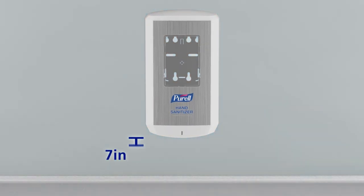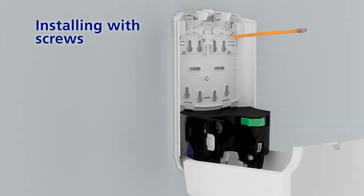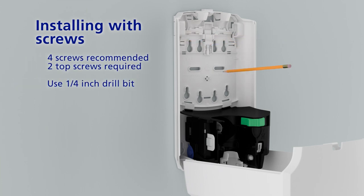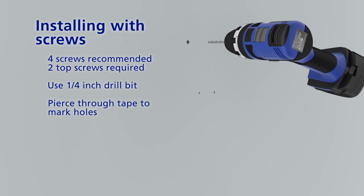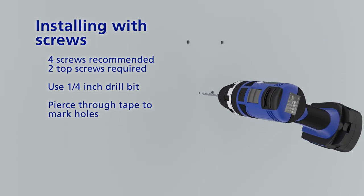Leave a 7-inch clearance below the dispenser for proper servicing. To install with screws, use the dispenser as a template to mark and drill holes. Start with the topmost holes. Drywall anchors may be needed.